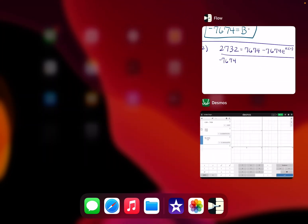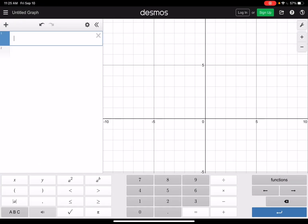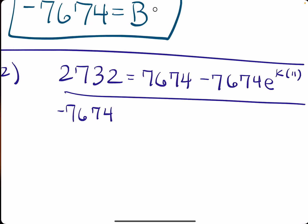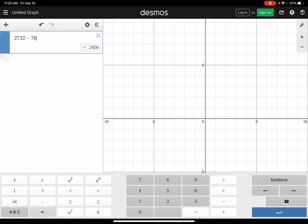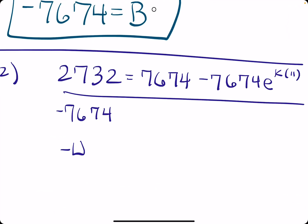2732 minus 7674 gives us negative 4942 equals negative 7674 times E to the 11K.